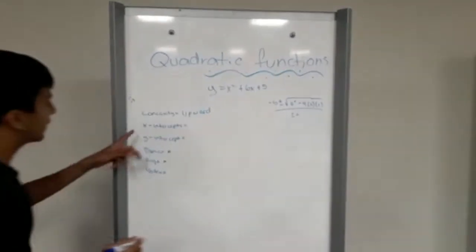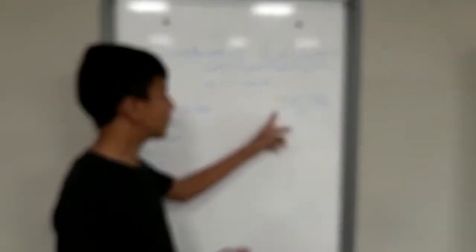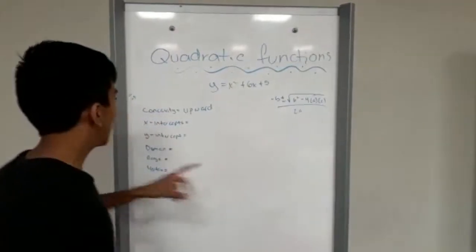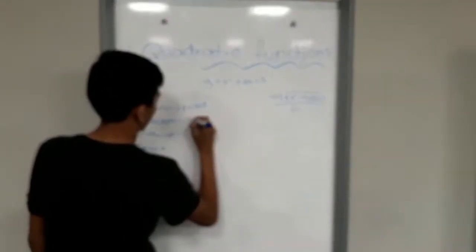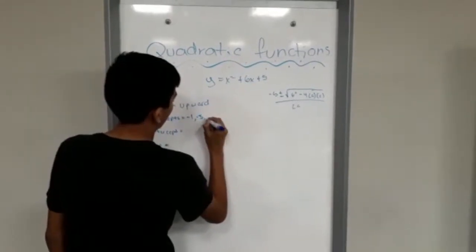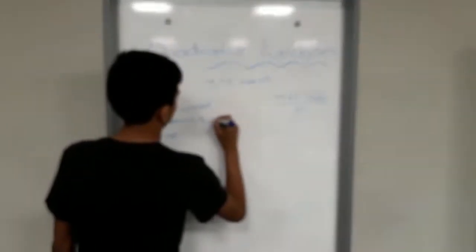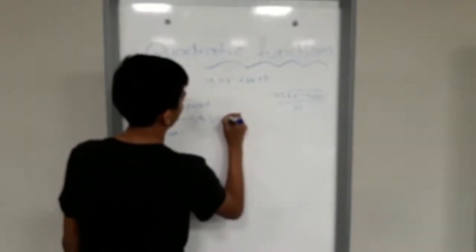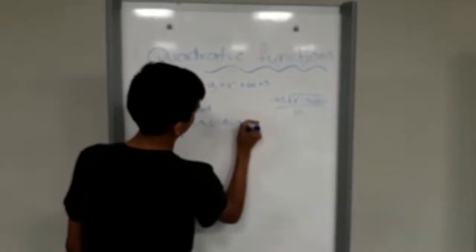Then the x-intercepts: we're going to get them with the general formula, and they are minus 1 and minus 5. As coordinates, they are (−1, 0) and (−5, 0).